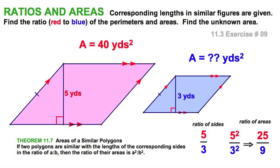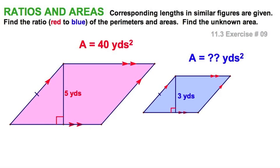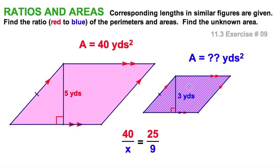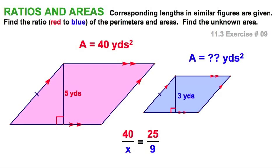Let's clean that up a little bit. And we're going to write down this little proportion. Because this area, the red area, 40, is to x, the blue area, as 25 is to 9. Again, the squares of the corresponding sides.